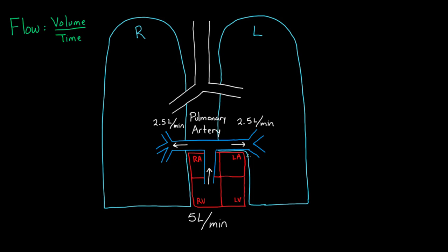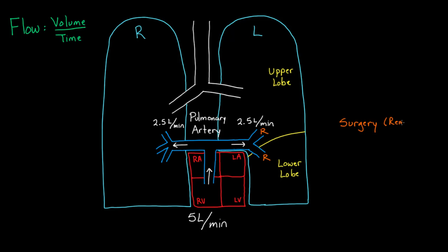Let's say a tragic event occurs and I have surgery on my lung. Below a yellow line is my lower lobe and above it is my upper lobe. Let's say the lower lobe needs to be removed — a pretty drastic thing. What would change in terms of blood flow? The resistance is going to change. Before the surgery, there was a certain amount of resistance in each blood vessel, and let's assume the resistance was about the same in both.